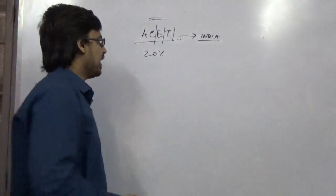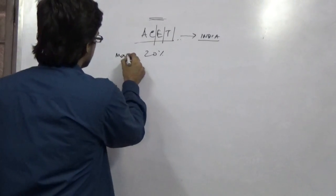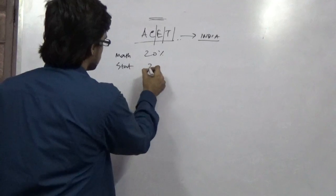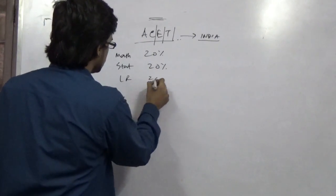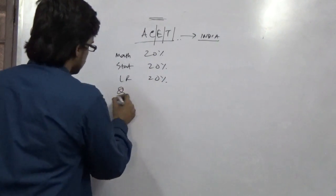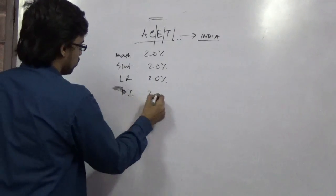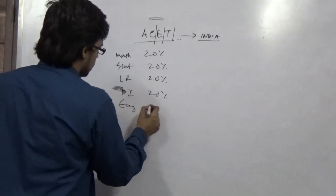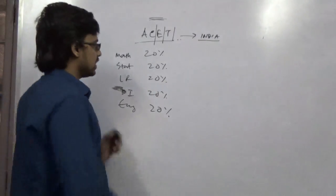Because this Actuarial Science Entrance examination has only 20% of maths. Only 20%. Next comes statistics, there is 20, logical reasoning 20, and then data interpretation 20, and there is English 20.